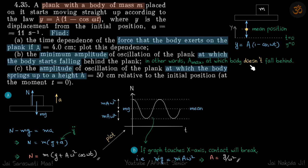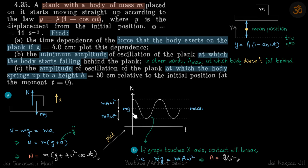From the N vs time graph, when the body loses contact, N = 0. As amplitude increases, the cosine curve shifts down until it touches the x-axis — that is the minimum amplitude for losing contact. At that point, mg = maω², giving the critical amplitude as a = g/ω².